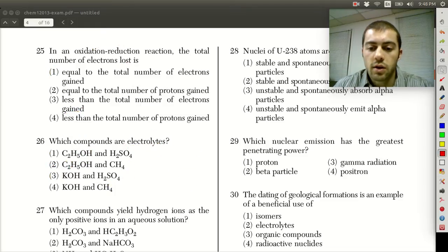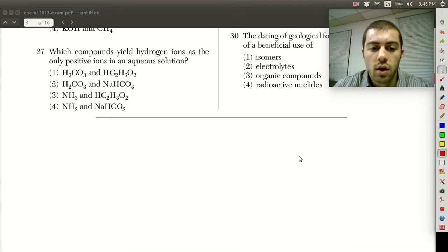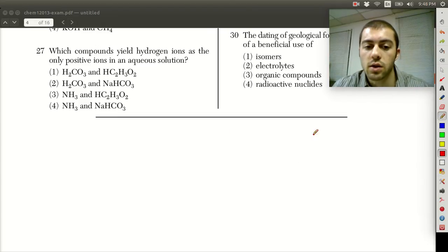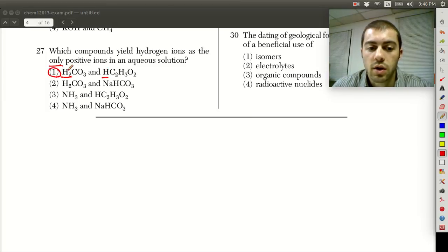Looking at the last one here, question 27. Which compounds yield H+ ions as the only positive ions in a solution? Looking at these, we have H2CO3, HC2H3O2. These are both acids. We have H+ ions available to be given off by both of these compounds. So this is actually going to be the answer, choice one, because we have H+.